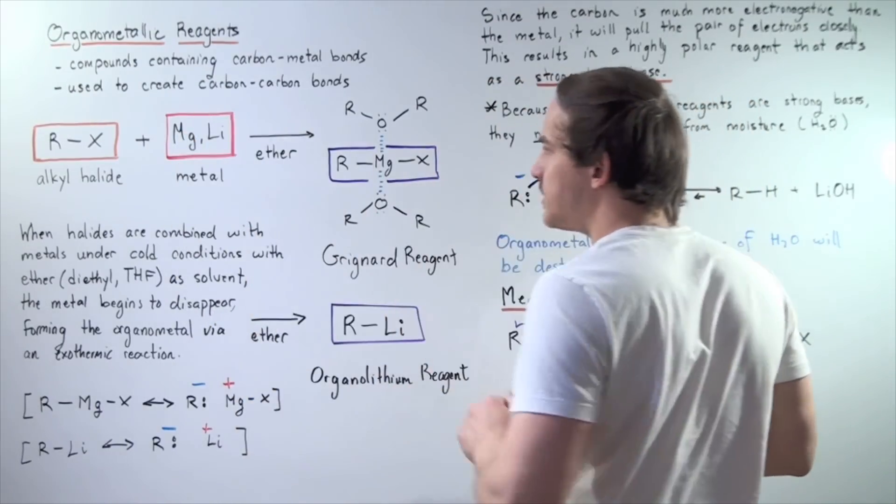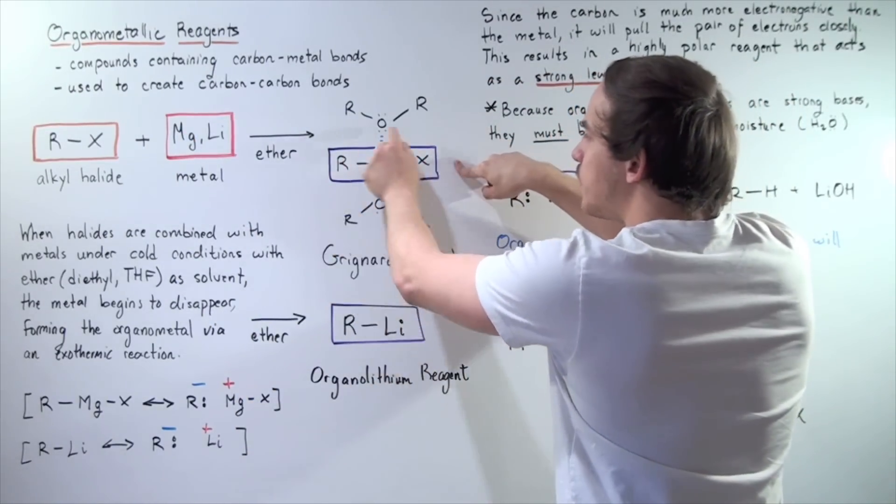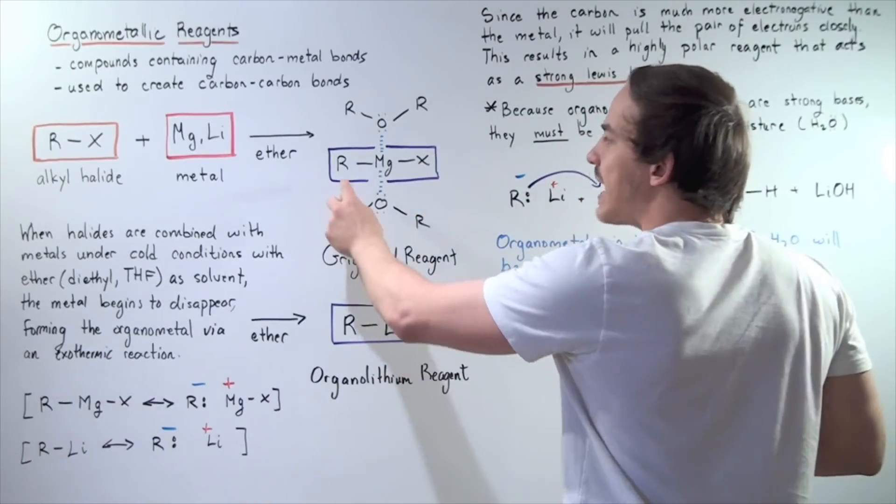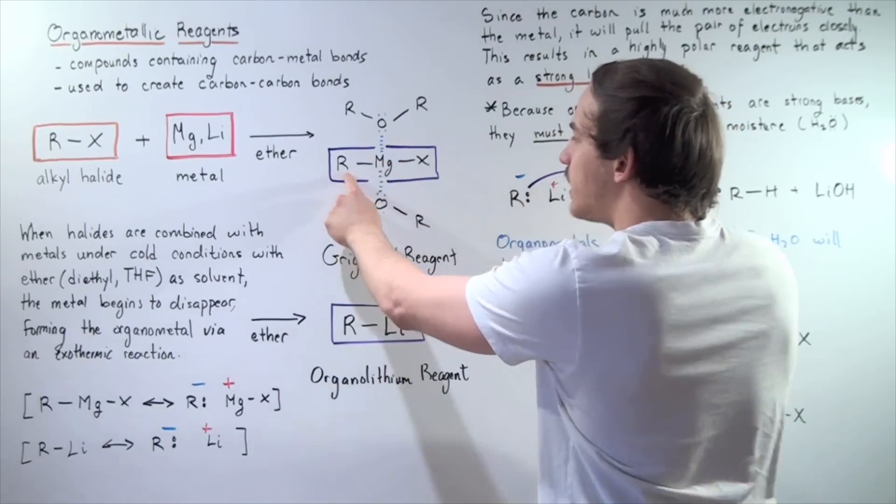So, if magnesium is used, the following organometallic reagents produce boxed in the purple. And so we have the R group, the carbon-Mg bond. So this is our carbon-metal bond.